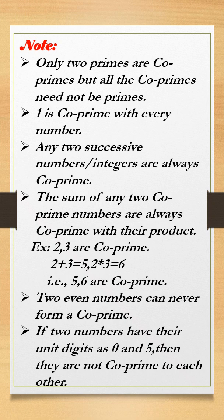1 is co-prime with every number. Any pair of numbers that includes 1 must be co-prime numbers. Any two successive numbers or integers are always co-prime.